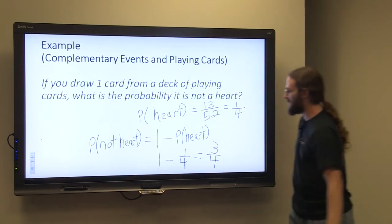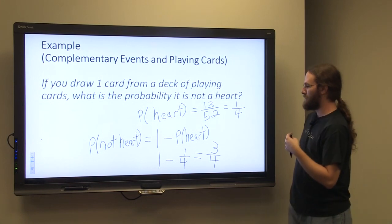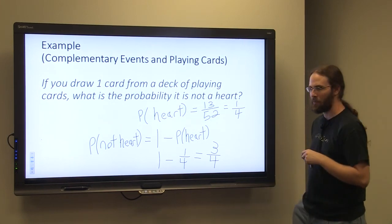Or as you can see here with the complement rule, the probability of not drawing a heart would be three out of four.